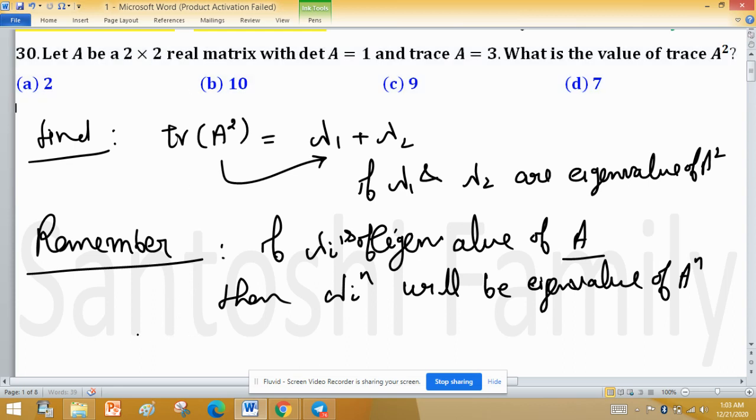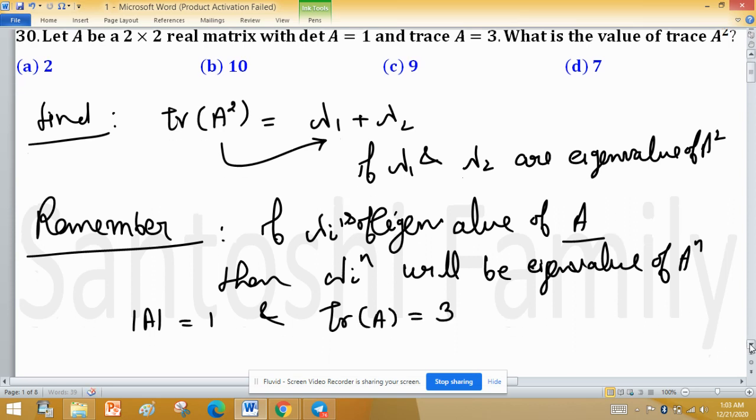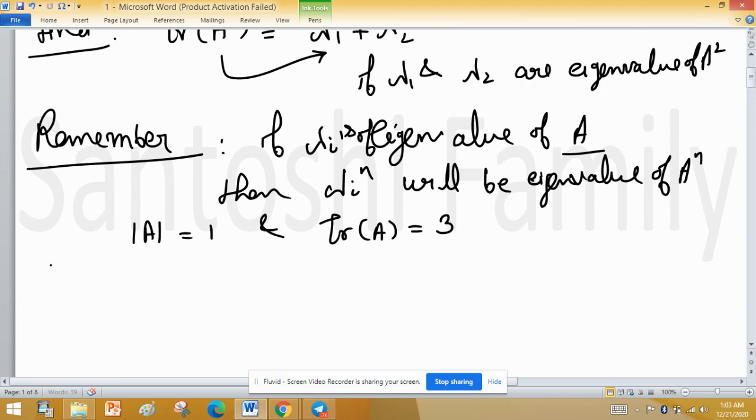As determinant of A is given to us and equal to 1, also trace of A is equal to 3, and we have to find trace of A squared.